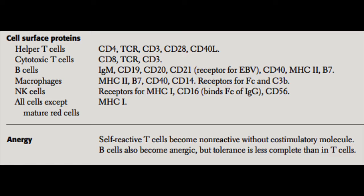On the surface of B cells, we have immunoglobulin. The BCR surface receptor is an IgM monomer, and that's responsible for recognizing and binding the specific antigen that the B cell is going to respond to. B cells also express CD19 and CD20, which are identification markers commonly used to identify B cells. CD21 is the receptor for Epstein-Barr virus. CD40 is involved in the CD40–CD40 ligand interaction.